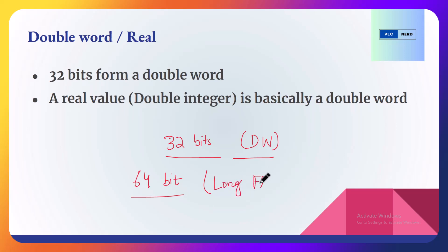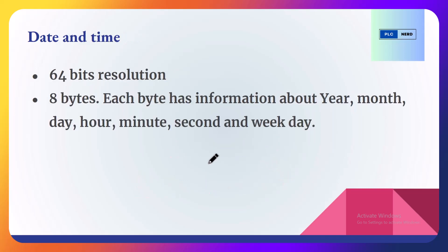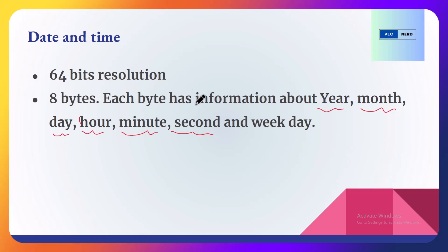Date is also one of the PLC data types, although it is very rarely used. Date and time has 64-bit resolution. The least significant first byte has information about the year, the next byte has information about the month, the next byte has information about the day, and so on. So each byte in the date and time PLC data type holds information about the year, month, day, hour, minute, second, and even the weekday — for example, Saturday, Sunday, or Monday.